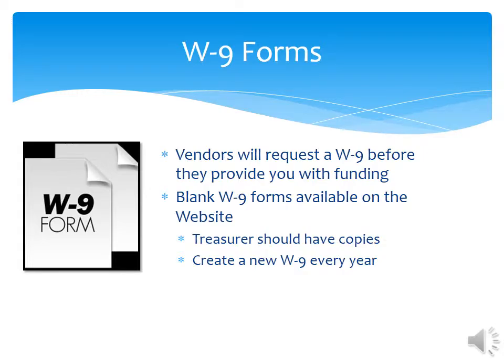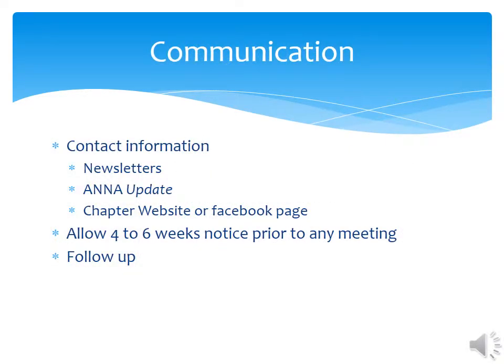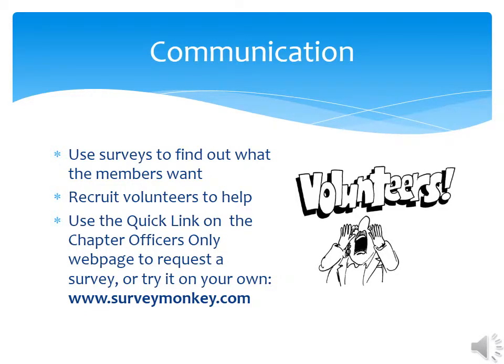What is a W-9 form? It is used by the company for tax purposes. Blank forms are available on the ANNA website. Have your treasurer print one out, have the president sign it, then make copies to have available. Make sure your list of members is current. Make your contact information available through chapter newsletters, emails, chapter websites, or your Facebook page. Follow up monthly with your members. Reach out to those who do not renew their ANNA membership or who stopped coming to meetings — see what you can learn to bring them back. Always plan ahead; people are busy, so give them time to make a commitment to your activities. Surveys are a great way to do a pulse check on your chapter. SurveyMonkey is a user-friendly survey tool that is free and easy to use, and contains many tips on how to create your survey.